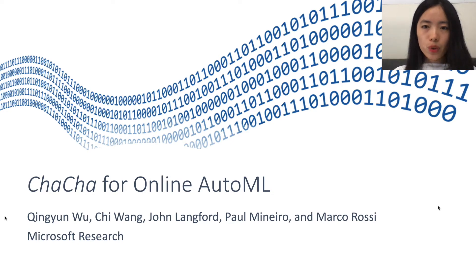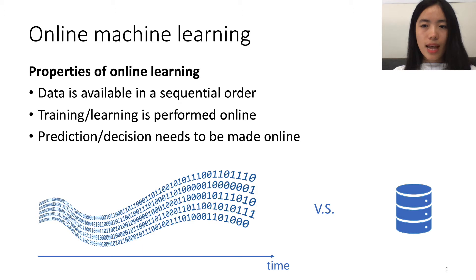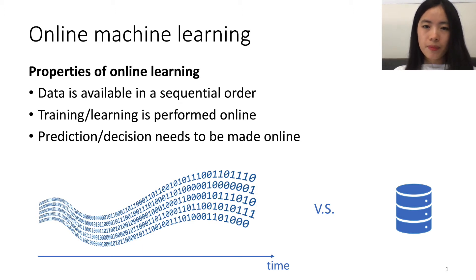Before diving into Online AutoML, let's first look at what is online machine learning and why it is important. Online learning is a type of learning method targeted at scenarios with the following properties. In a typical online learning setting,